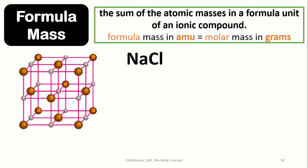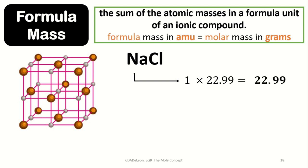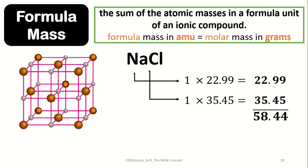Let's have sodium chloride as our example. Sodium chloride is made up of one atom of sodium and one atom of chlorine. Sodium has one atom multiplied by its atomic mass of 22.99, which equals 22.99, while chlorine is equivalent to 35.45. Getting the sum of these two is equivalent to 58.44.